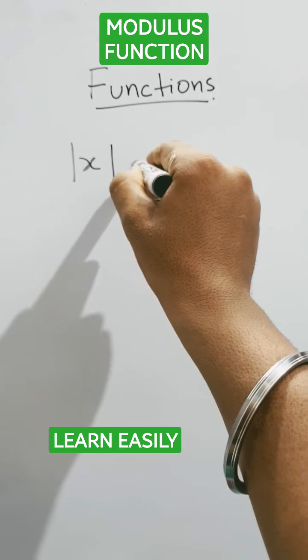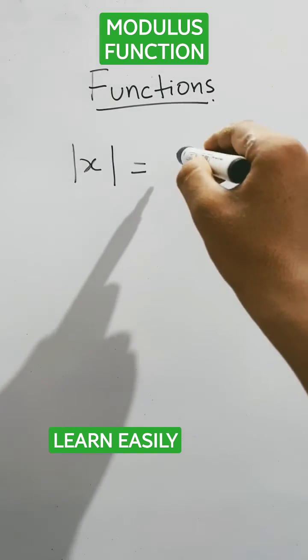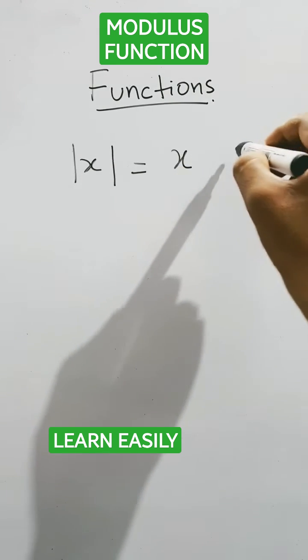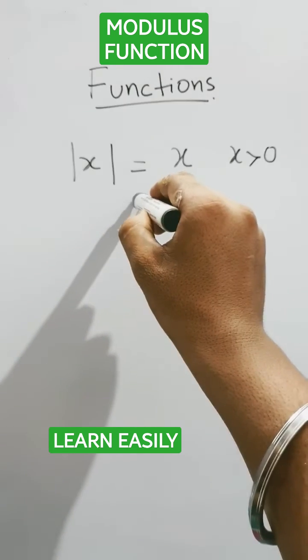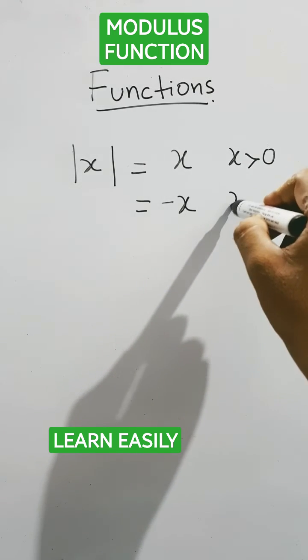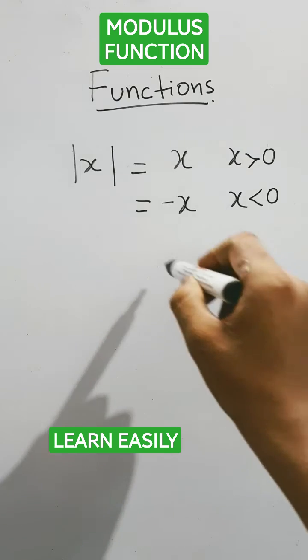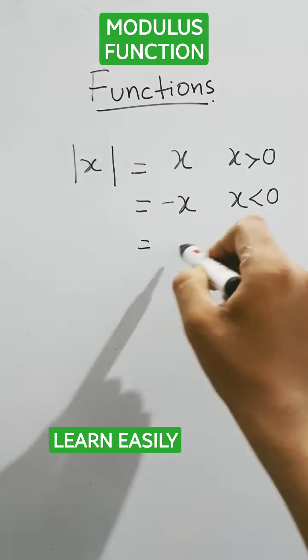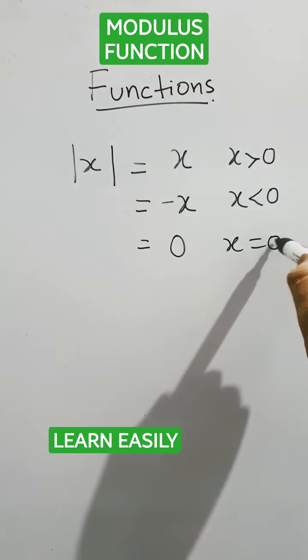Guys, let's learn the value of modulus. It equals x if x is positive, that is greater than 0. The modulus of x equals minus x if x is less than 0. And modulus of x equals 0 whenever x equals 0.